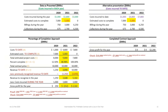From a completed contract perspective, this is straightforward. For 2020 and 2021, there is no gross profit recognized, and all of the gross profit is therefore recognized in 2022 — $2.2 million — being the contract price minus total costs, which is the total profit on the contract.